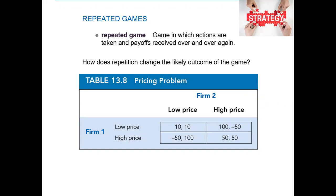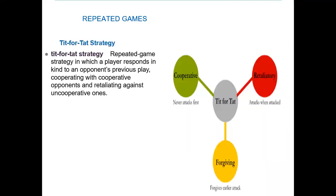If both firms set a low price, outputs match. If both firms play repeated games and agree together setting high prices, both are winners. In repeated games, the best outcome is high prices through collusion to achieve high returns. However, if one sets a low price against the other's high price, they win. It depends on the number of repeated actions. With five players in the market, making an agreement based on trust and rational behavior is important.